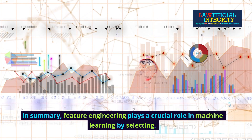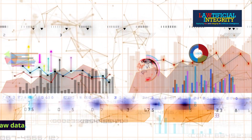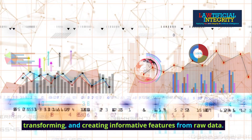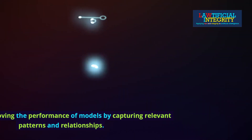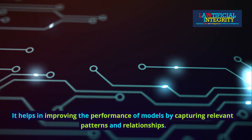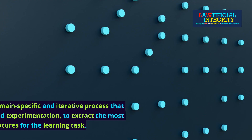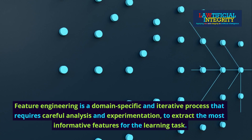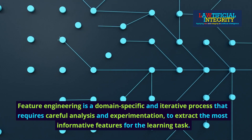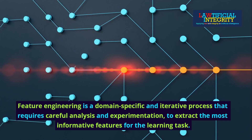In summary, feature engineering plays a crucial role in machine learning by selecting, transforming, and creating informative features from raw data. It helps in improving the performance of models by capturing relevant patterns and relationships. Feature engineering is a domain-specific and iterative process that requires careful analysis and experimentation to extract the most informative features for the learning task.